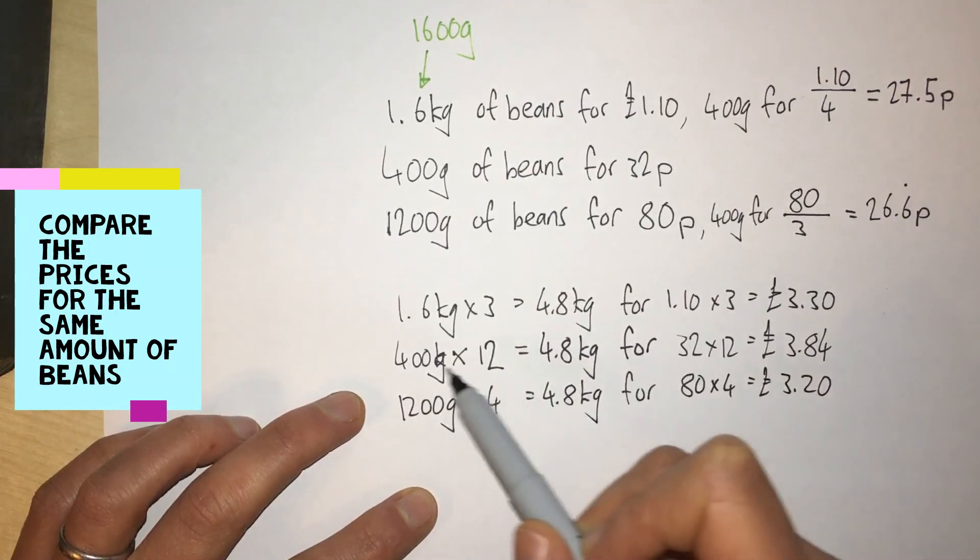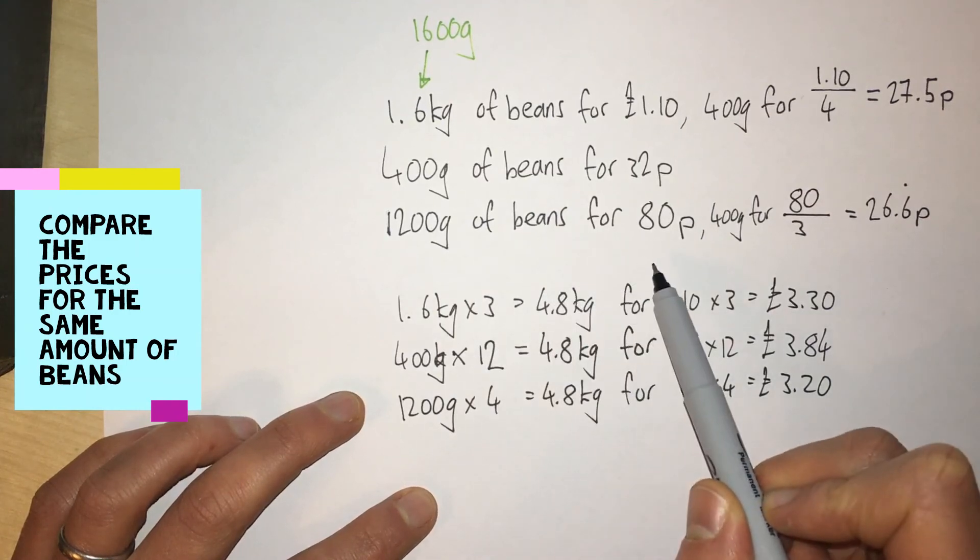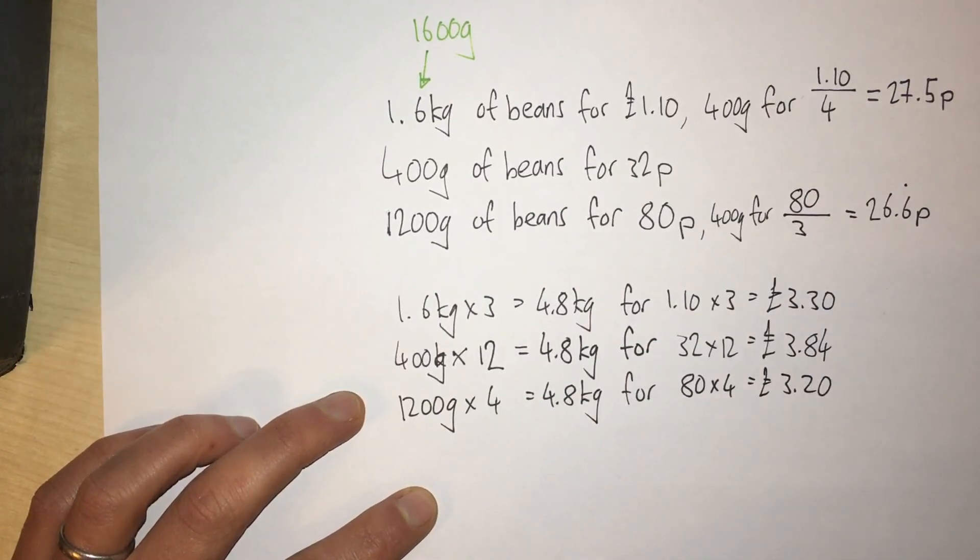Buying 1200 grams of beans for 80p gives me the best deal, the best value for money.